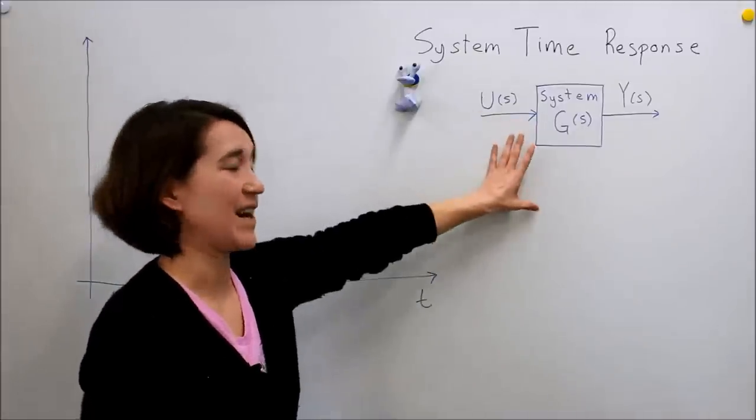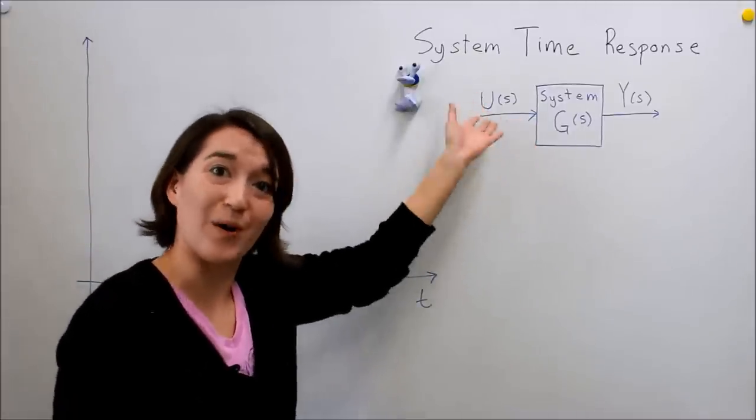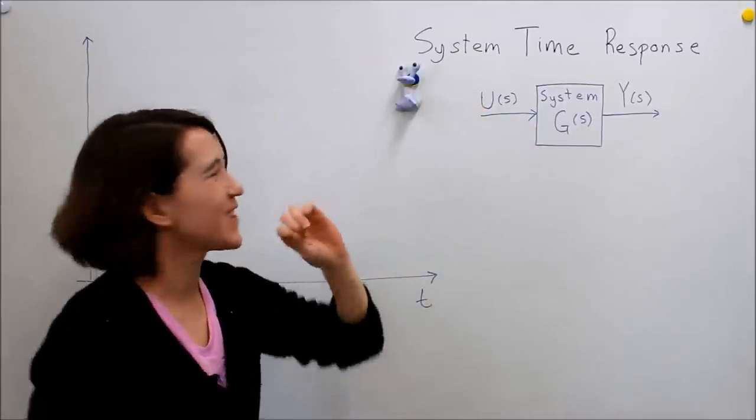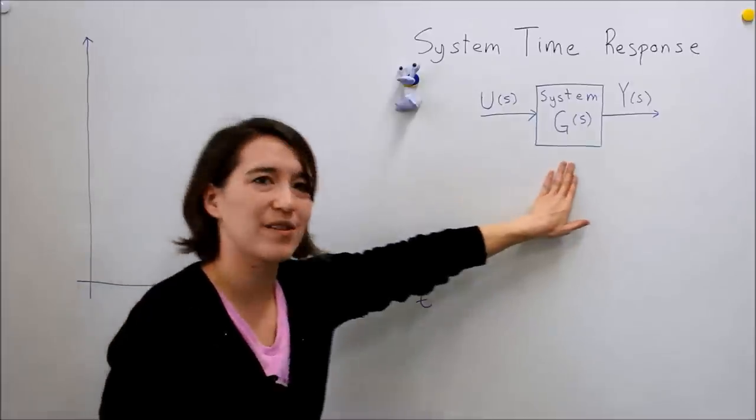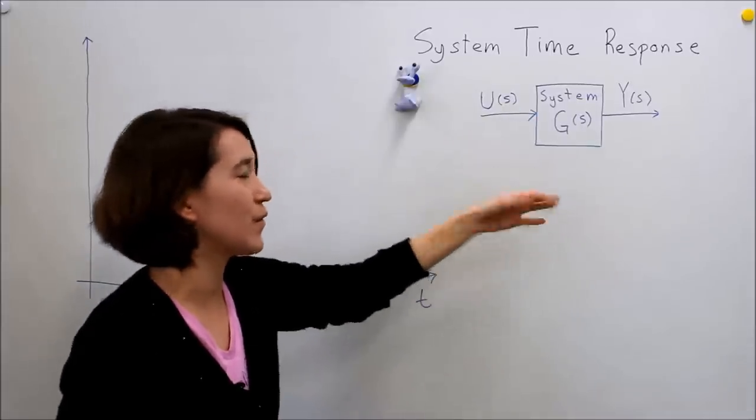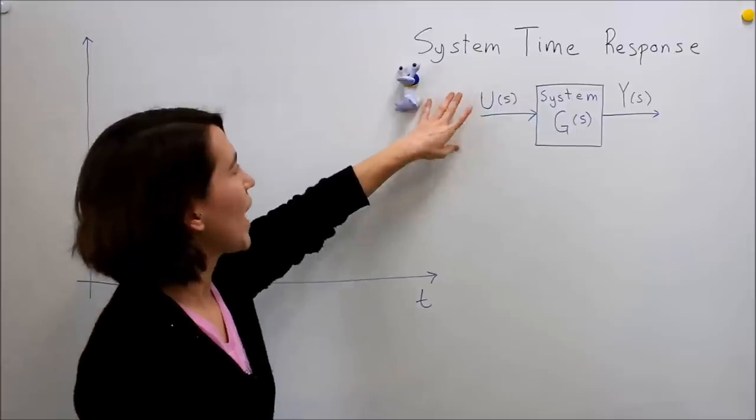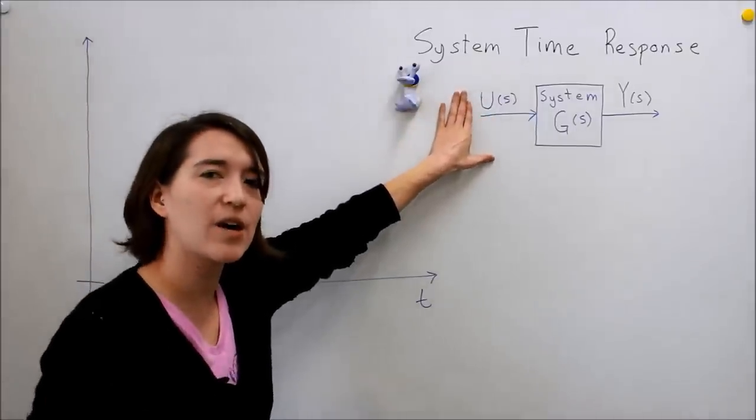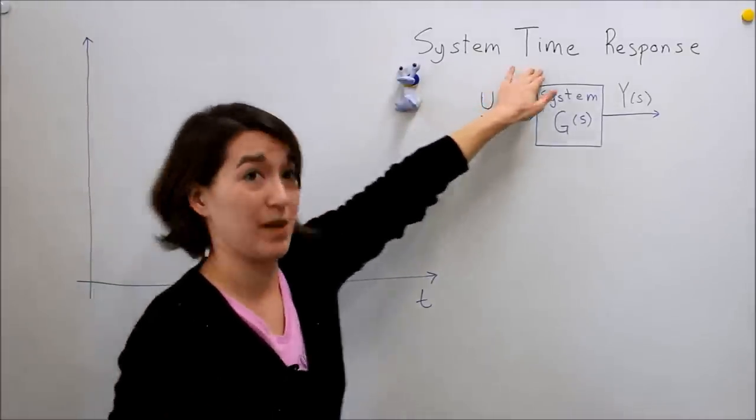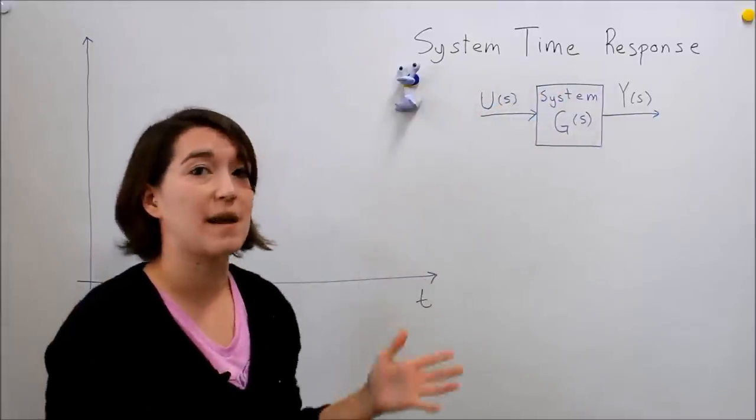The controller that goes to actually control the system towards some objective. But first we need to look at our system. We've modeled the system G, we're in the frequency domain again, and we have an input. We're going to look at how the system reacts in the time domain from a unit step input.